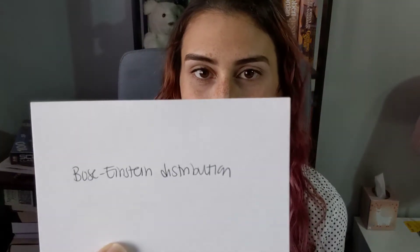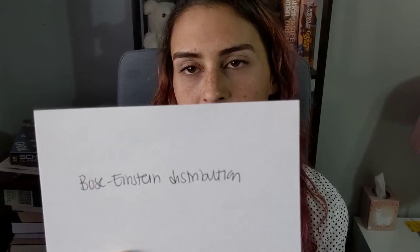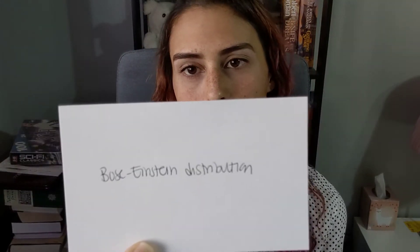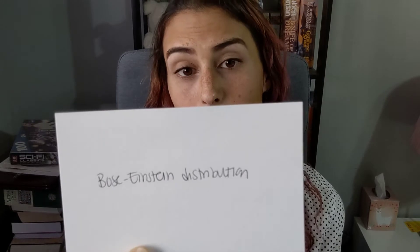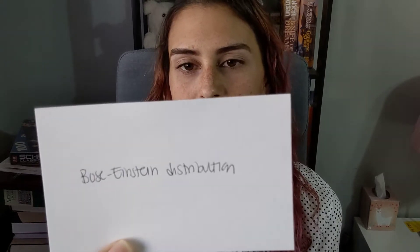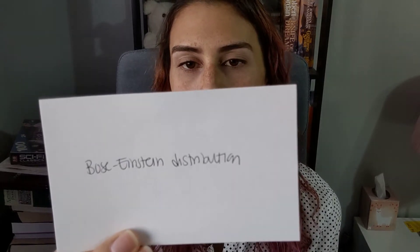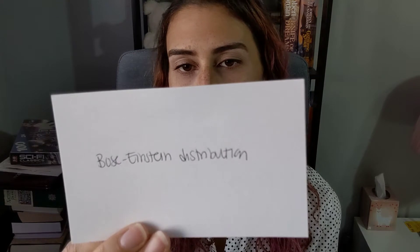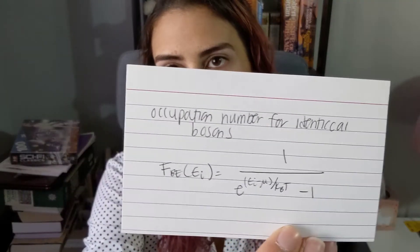The Bose-Einstein distribution gives the occupation number for identical bosons, and is given by 1 over (e to the (epsilon sub i minus mu) over k_B T, minus 1).